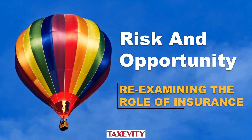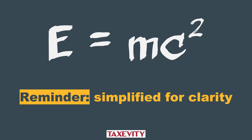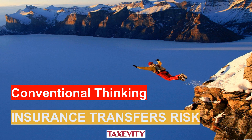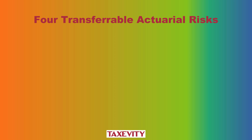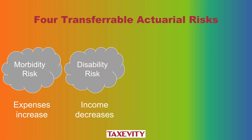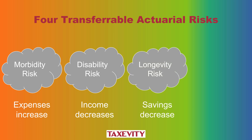What we're doing is re-examining the role of life insurance. Conventional thinking says that life insurance is a way to transfer risk, and that's true. There are four transferable actuarial risks. One is morbidity — that's where expenses increase. There's disability, where income decreases. There is also longevity, where savings decrease because people are living longer than their savings, or they're incurring medical expenses for long-term care, for example, that erode the savings that were intended to last longer.